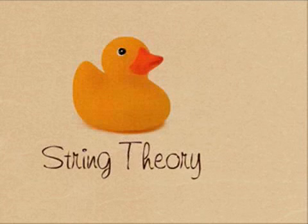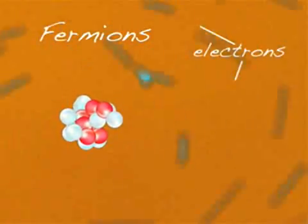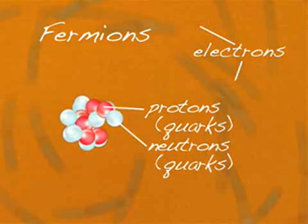In our basic understanding of physics, objects are made of atoms. Each atom contains subatomic particles called fermions. But what makes up these particles?